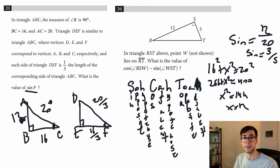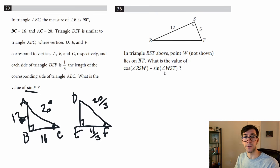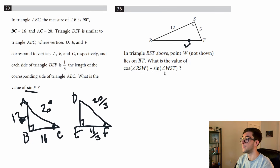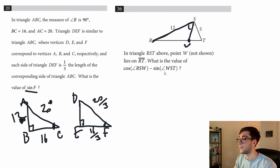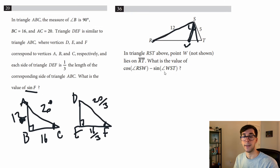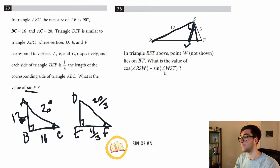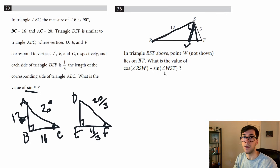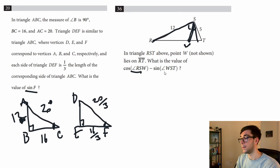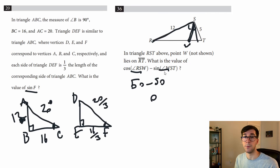Problem 36 is one you'll get wrong without knowing a specific rule. In triangle RST, W lies on RT. The question asks for cosine of angle RSW over sine of angle WST. These two angles are complementary — they sit next to each other. The key rule: the sine of an angle equals the cosine of its complementary angle. So cosine RSW equals sine WST, meaning they're equal. Say both were 50 degrees: 50 minus 50 equals zero. That's the answer. You must know this rule to score above 700.